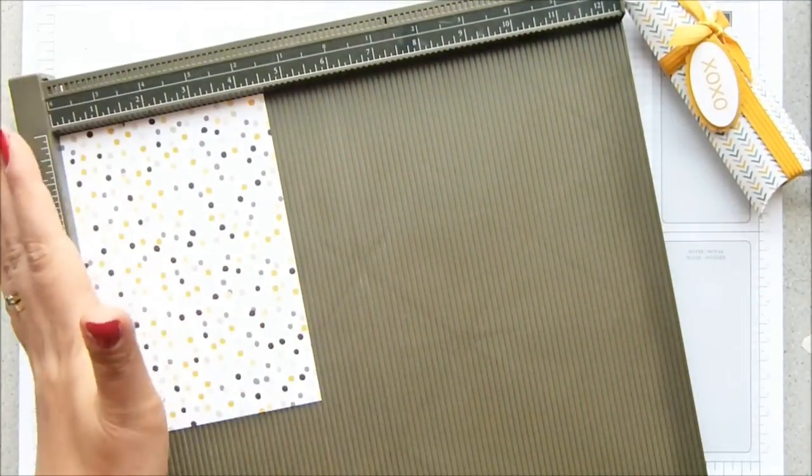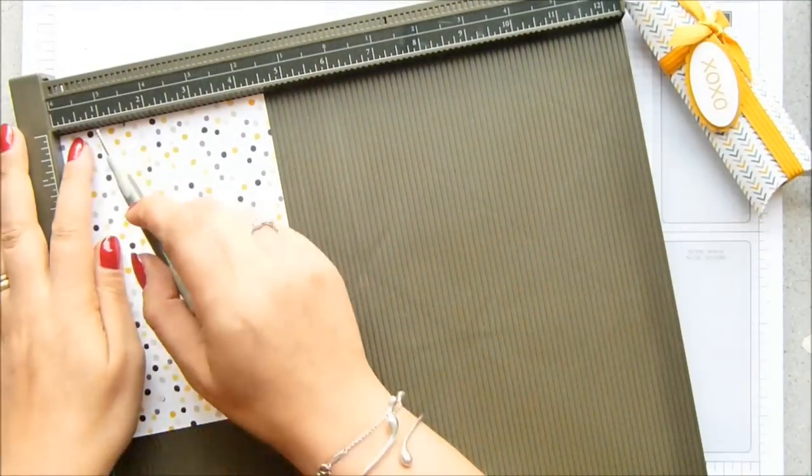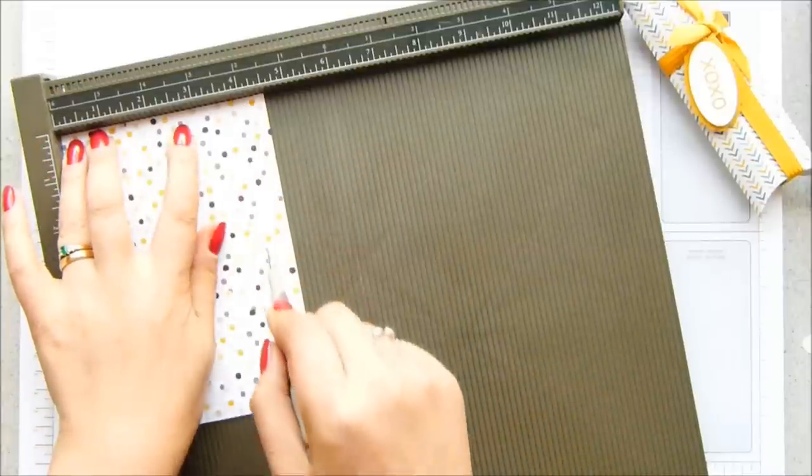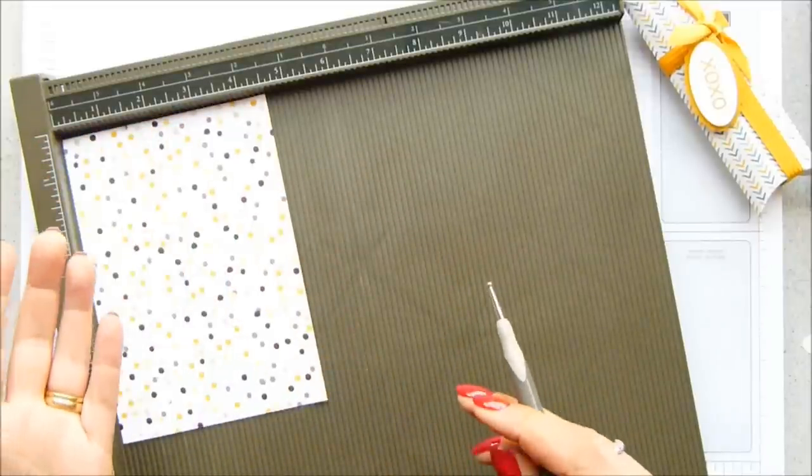On the short side, definitely the short side, we're going to score it at two inches and four inches, which is five centimeters and ten centimeters. That's all you need your scoring tool for.